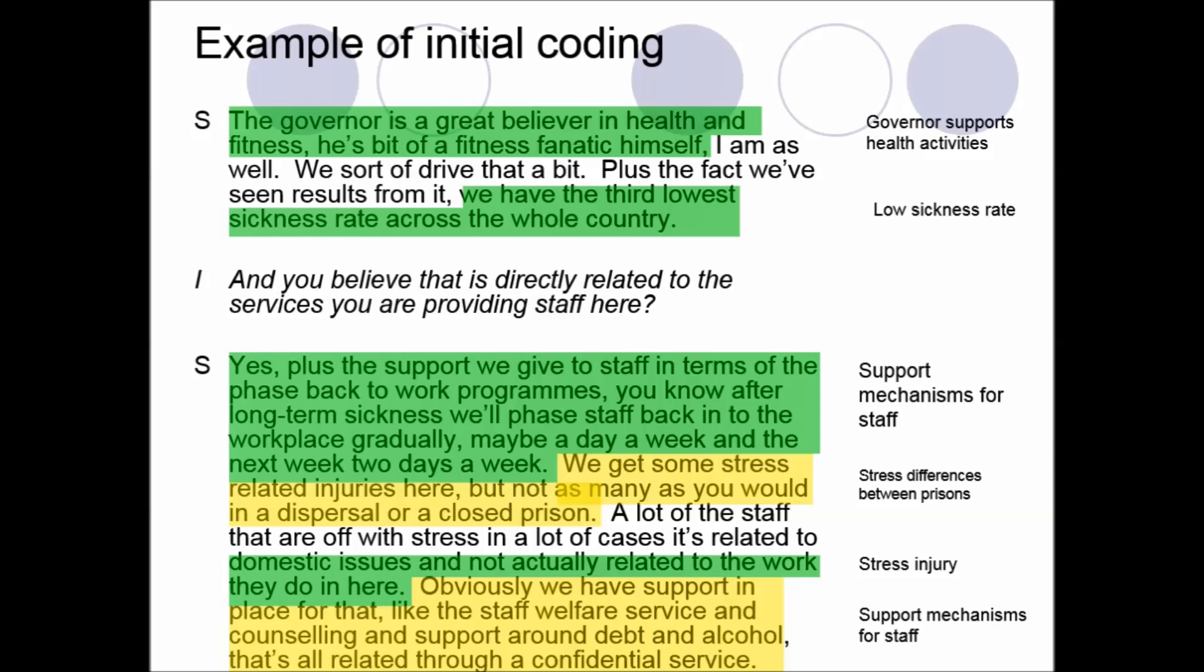Now the process of coding as I've mentioned is about highlighting interesting or salient features of the data and providing that data with a code. So you can see here where I've highlighted parts of the text that are of interest to my research questions, and on the right hand side in the margin I provided a code that represents features or meaning within that text. So this is what your coding process should look like. You should have a long list of codes down the right hand side of your transcript that relate to particular segments or passages of text within your transcript.